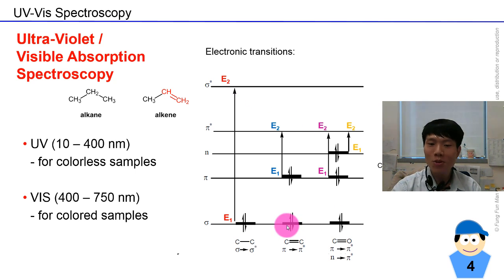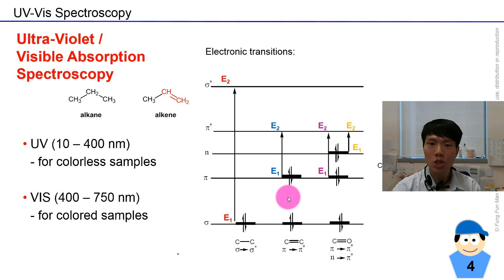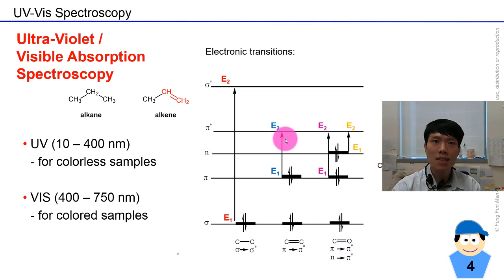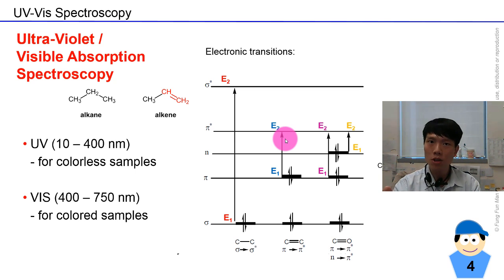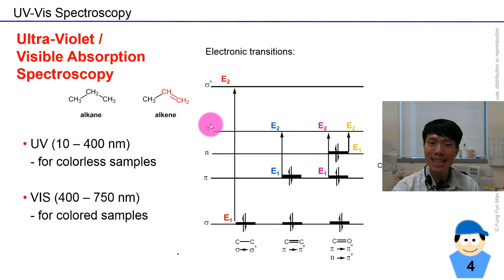When we look at a C=C double bond, it has one sigma bond and one pi bond — two electrons in each of the sigma and pi orbitals. If you pump in some energy, the pi electrons will transit from pi to pi-star. This is because the pi bond is the weaker bond; if you give a little energy, the pi bond will break first. Pump more electrons into the anti-bonding orbital and it will crack the pi bond; with even more energy, it will break both bonds.